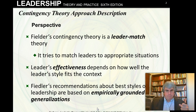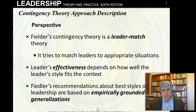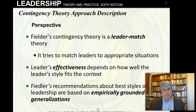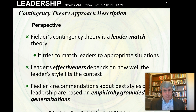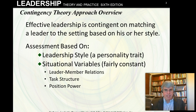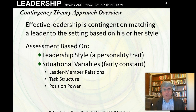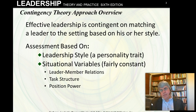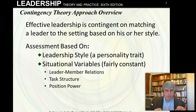Fiedler's recommendations about the best styles are valuable because they're based on empirical research. Throughout the 60s and 70s, this was a widely tested leadership theory, and we have a lot of results. It's not as great as people first thought, but it does work pretty well. The main idea is that effective leadership is contingent — meaning dependent on — matching a leader to the setting based on his or her style. To make the right decisions, we have to assess the leader's leadership style, which in this model is a personality trait — something supposed to be fairly constant.